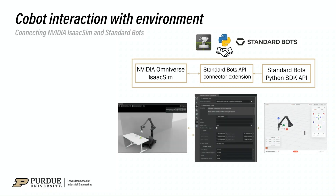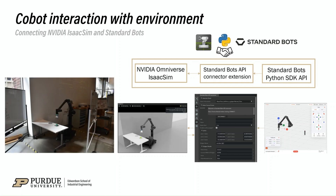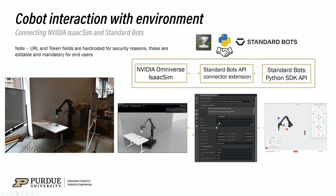The below screenshots will help better visualize the setup. This is the native simulator. This is the extension and this is ISAX SIM. The real environment is shown on the left side — this is how the Cobot is positioned in our facility. If we look closely inside the extension, the URL and the token fields are blank, because we hardcoded them for security purposes. As an end-user, you will have to fill them correctly to use the extension.